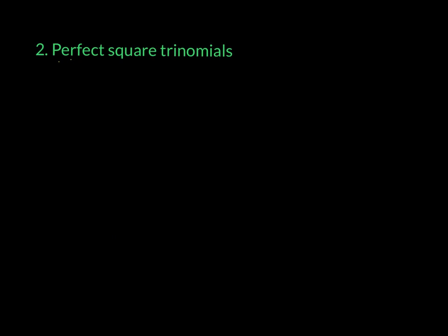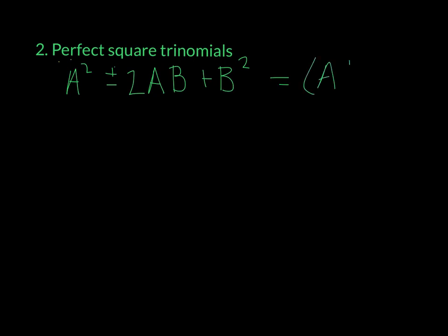The next special factoring rule is factoring a perfect square trinomial. If you have a squared plus or minus 2ab plus b squared, that is either going to factor as a plus or minus b, squared. A lot of times people don't like to use the perfect square trinomial rule — they'll just factor it how they normally would factor a trinomial, and that's fine. But this will save you a lot of work if you can remember it.